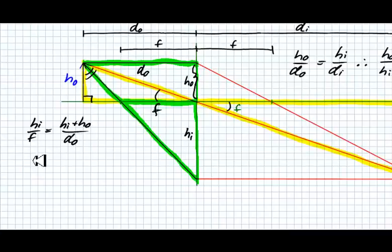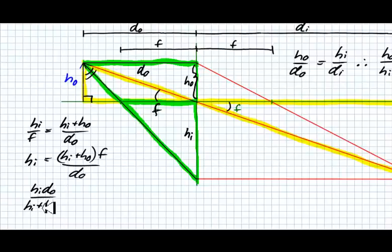So solving this equation for f, what I'm going to do is multiply both sides by f. So we get hI is equal to hI plus hO times f over dO. And I want to get f by itself. So I'm going to multiply both sides by dO and divide both sides by hI plus hO. And that's going to leave us with hI dO divided by hI plus hO, and that is equal to f.